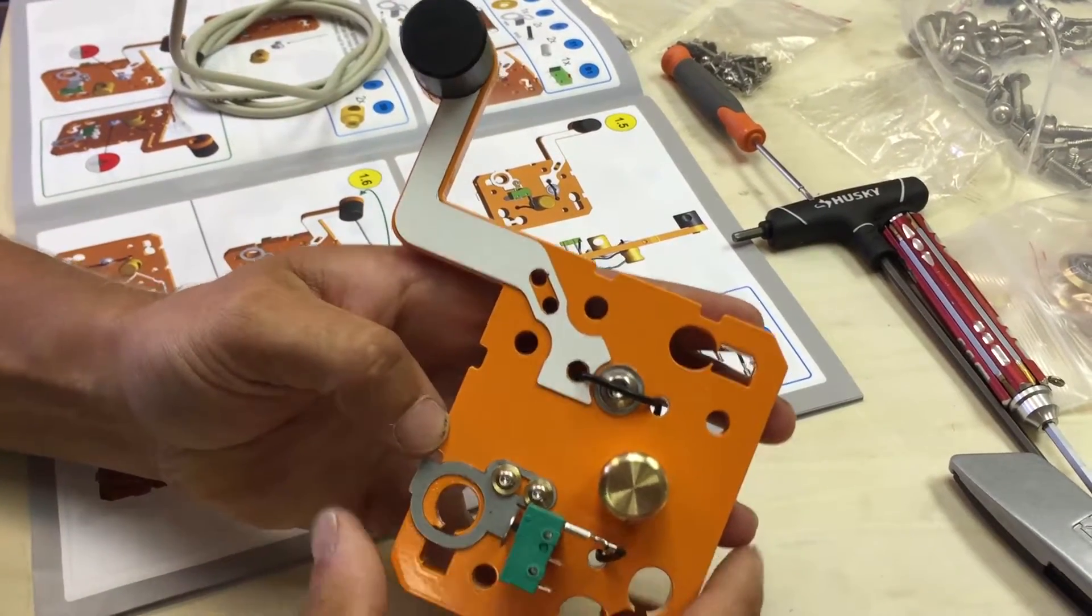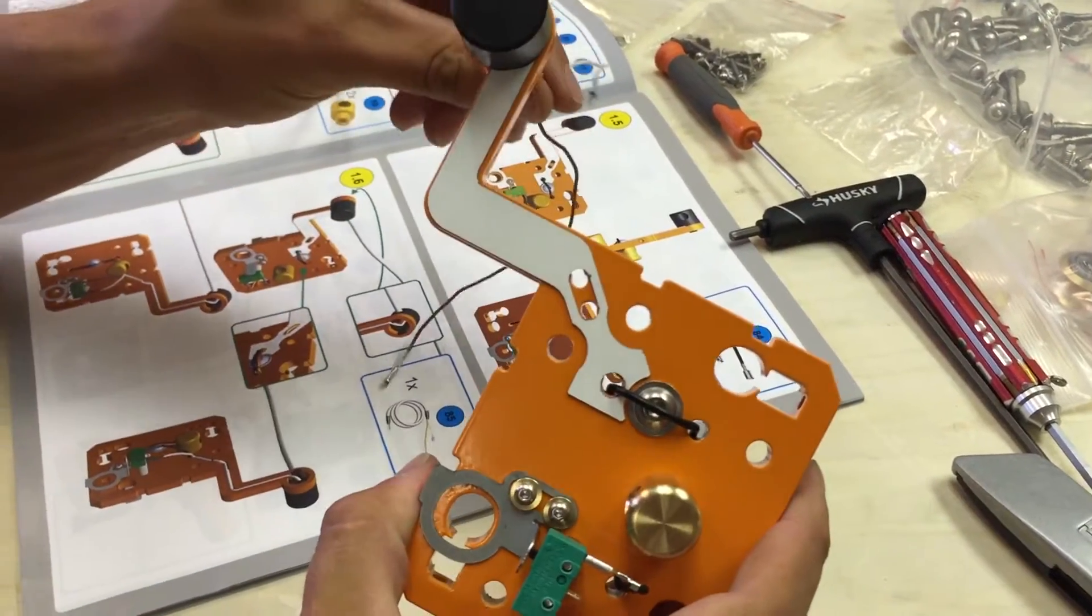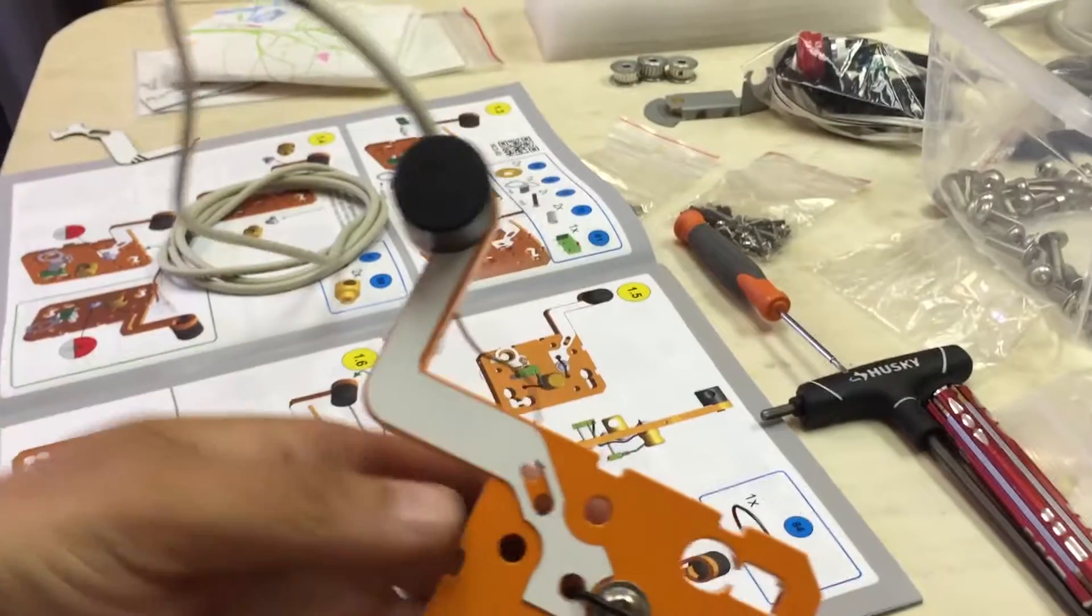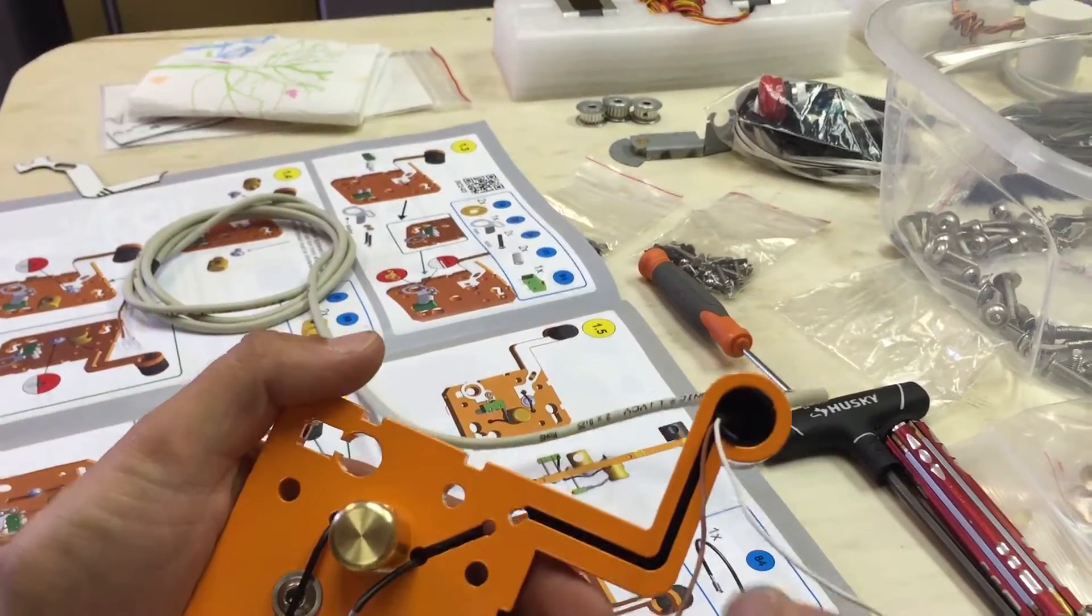Okay, on step 1.6, once you get the wires run through the end cap, we're going to flip it over. That's where it's going to start.